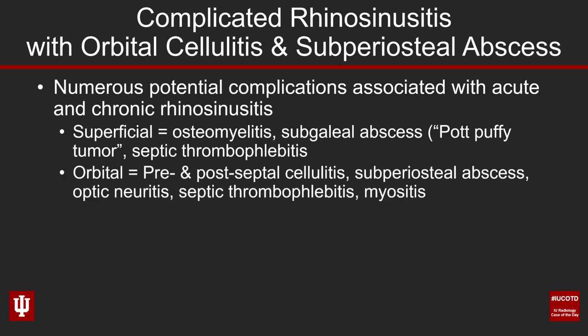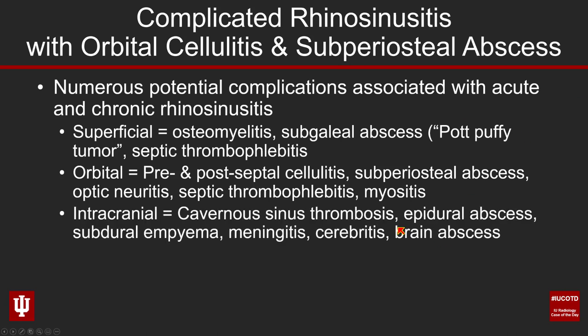Orbital complications include pre- and postseptal cellulitis, subperiosteal abscess as in this case, rhinogenic optic neuritis where inflammation surrounding the optic nerve causes optic neuritis symptomatology, septic thrombophlebitis of the superior ophthalmic vein which can track back intracranially, and myositis of the extraocular muscles. The third broad category is intracranial involvement, including cavernous sinus thrombosis, epidural abscess, subdural empyema, meningitis, cerebritis, and brain parenchymal abscesses. Your job as a radiologist is to look for all of these potential complications.